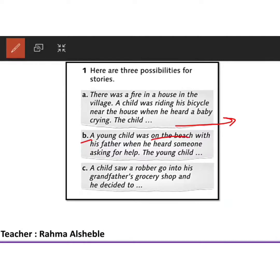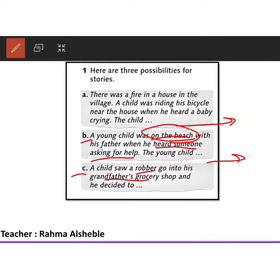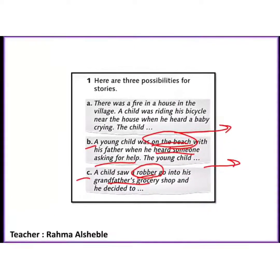Story B: a young child was on the beach with his father when he heard someone asking for help — possibly someone who was swimming and in trouble. Story C: a child saw a robber go into his grandfather's grocery shop, and he decided — should he call the police, go and fight the robber, or go and tell his grandfather? There are many possibilities.